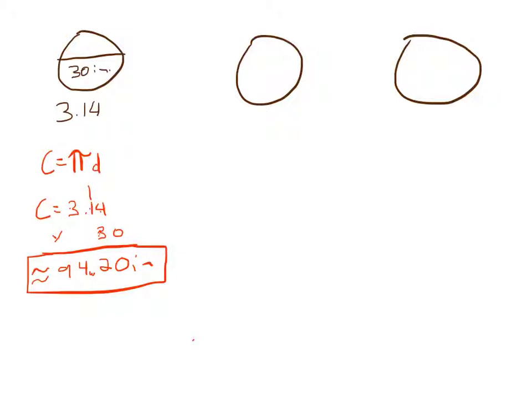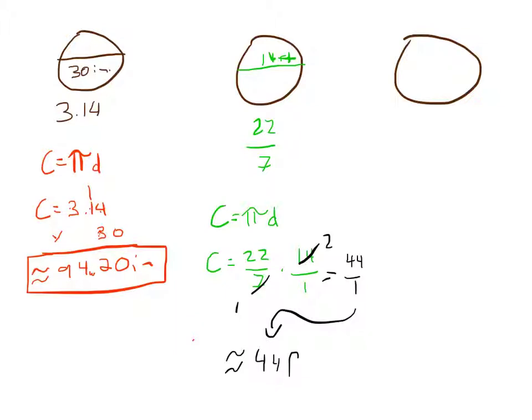All right, for our second one they are telling us the diameter is 14 feet and they say use 22 over 7 for pi. So again, circumference equals pi times diameter, so this time I'm going to say 22 over 7 times 14 feet, which is really 14 over 1. Now I can go ahead and I see I can reduce this to 1 half diagonally. 22 times 4 is 44 over 1, so I would say my answer is approximately 44 feet.